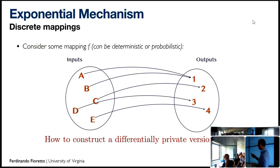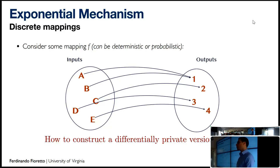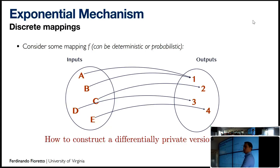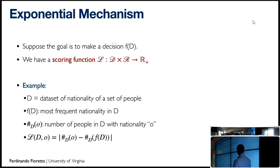So far we've been working with numeric queries — age, counts, sums. What if you have a mapping from inputs to discrete decisions where you don't have a good metric? The exponential mechanism handles this. You want to make a decision f(D); you're given a scoring or loss function L that tells you for any possible output and input what score is associated with it.